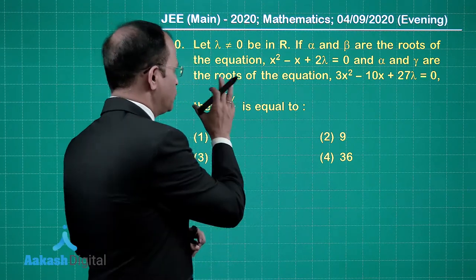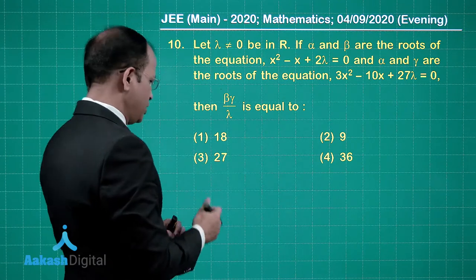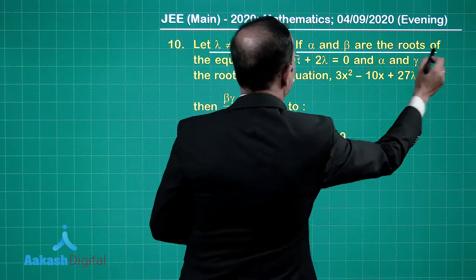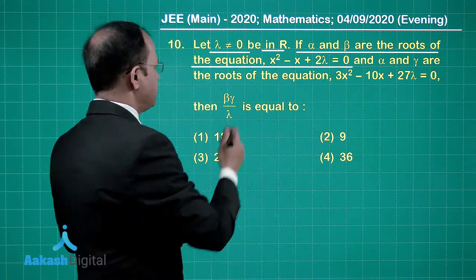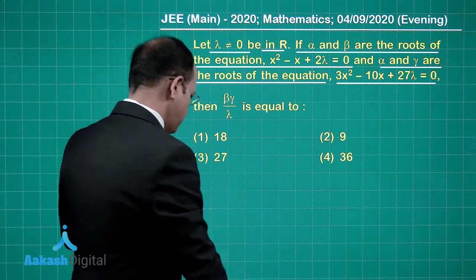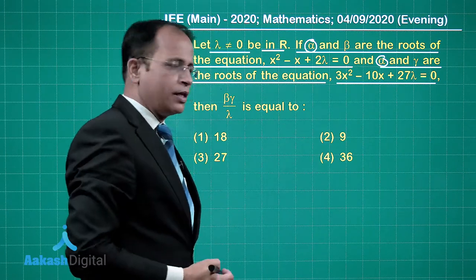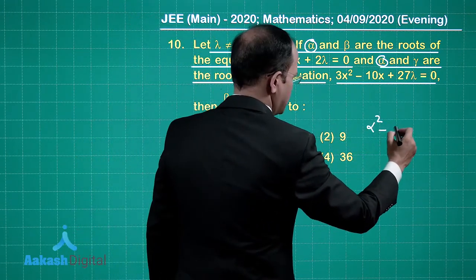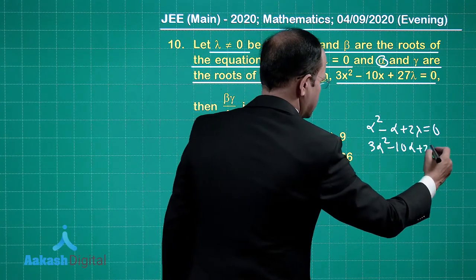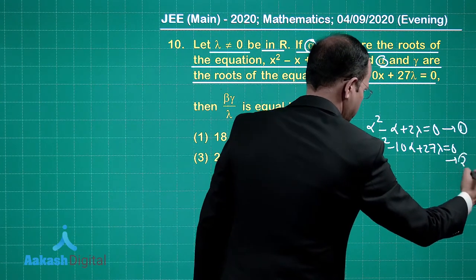Question number 10 is straightforward if you know the root properties of quadratic equations. Lambda is not equal to 0 and is real. Alpha and beta are roots of x² minus x + 2*lambda = 0, and alpha and gamma are roots of 3x² minus 10x + 27*lambda = 0. Since alpha is a common root, substituting x = alpha into both equations gives: alpha² minus alpha + 2*lambda = 0 (equation 1), and 3*alpha² minus 10*alpha + 27*lambda = 0 (equation 2).